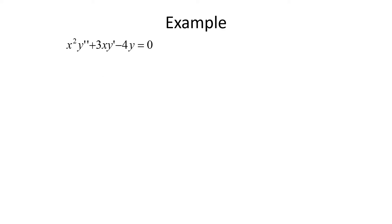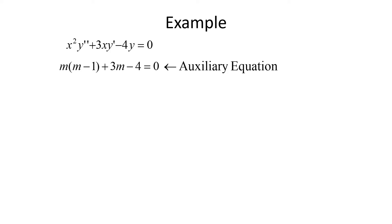For the second example, x²y'' + 3xy' - 4y = 0. The auxiliary equation is m(m-1) + 3m - 4 = 0. Distributing gives m² - m + 3m - 4 = 0, which simplifies to m² + 2m - 4 = 0. This doesn't factor, so we use the quadratic formula.